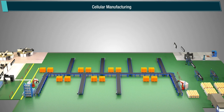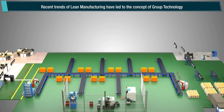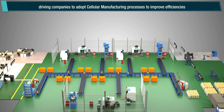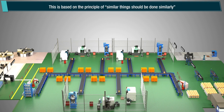Cellular Manufacturing. Recent trends of lean manufacturing have led to the concept of group technology, driving companies to adopt cellular manufacturing processes to improve efficiencies. This is based on the principle that similar things should be done similarly.